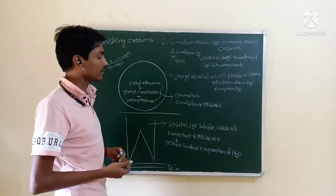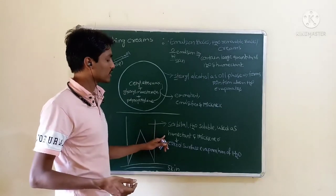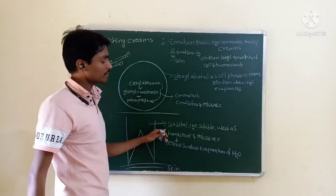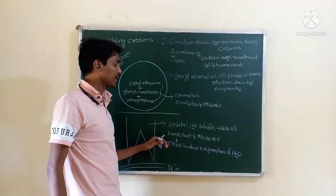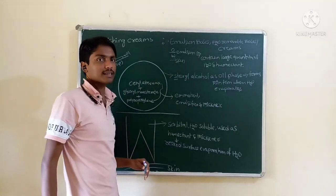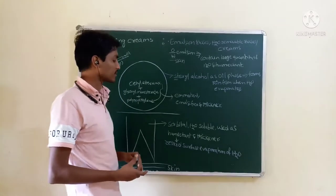Water system. Water system contains sorbitol, which is water soluble and used as a humectant. Sorbitol is a carbohydrate alcohol. It is a humectant and thickener. Humectant means it retains water, it retains surface water.